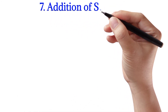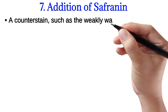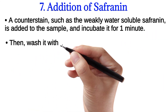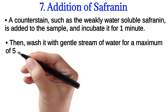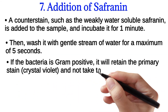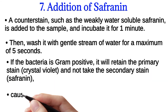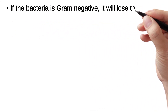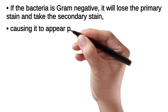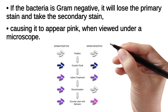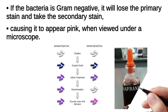Addition of safranine. A counter stain such as the weakly water-soluble safranine is added to the sample and incubated for one minute. Then wash it with a gentle stream of water for a maximum of five seconds. If the bacteria is Gram positive, it will retain the primary stain and not take the secondary stain, causing it to look violet or purple under a microscope. If the bacteria is Gram negative, it will lose the primary stain and take the secondary stain, causing it to appear pink when viewed under a microscope. Here is the diagram of Gram positive and Gram negative bacteria after addition of safranine.